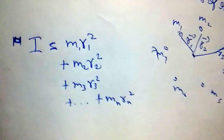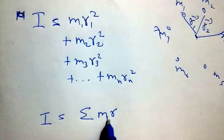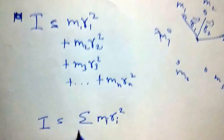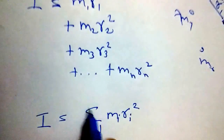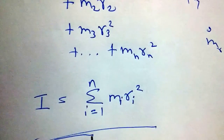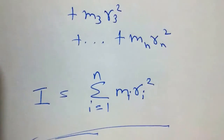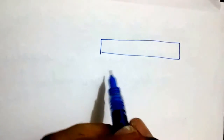So: m1·r1² + m2·r2² + m3·r3² + ... + mn·rn². We can write this as I = Σ mᵢrᵢ², where i = 1 to n. This is the basic equation for moment of inertia. Now we will look at standard moment of inertia formulas for shapes commonly encountered in civil engineering problems.